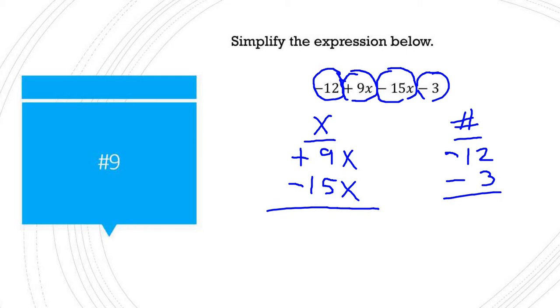So a positive 9 minus 15 gives you a negative 6x. And a negative 12 minus 3 is negative 15.